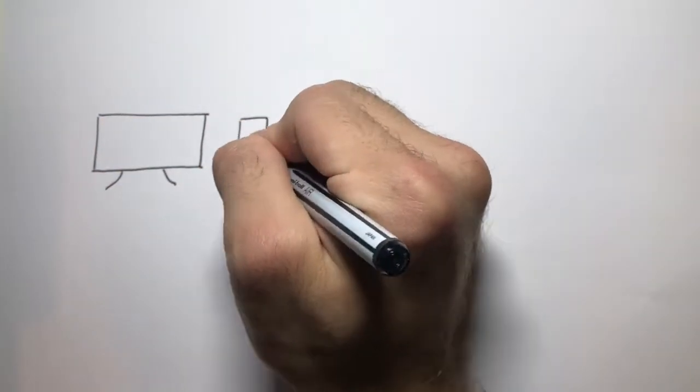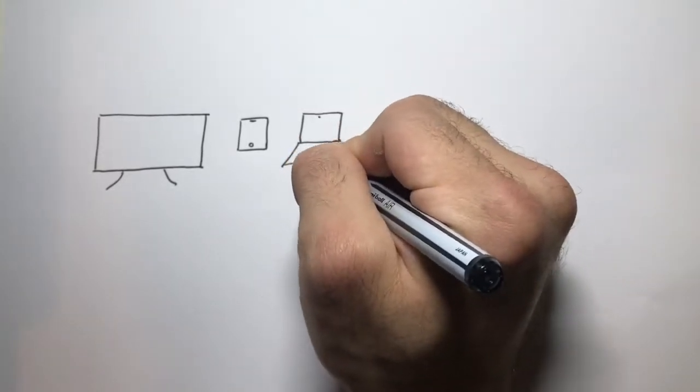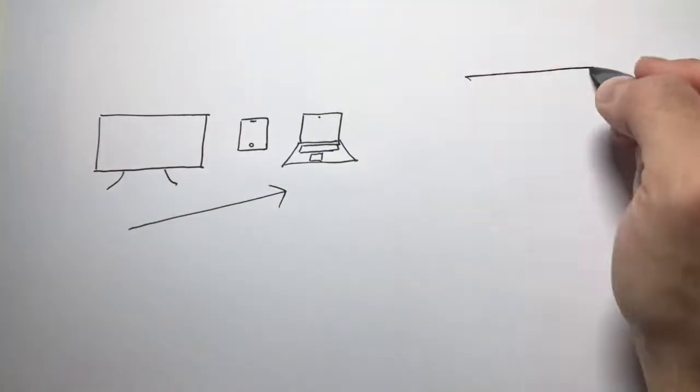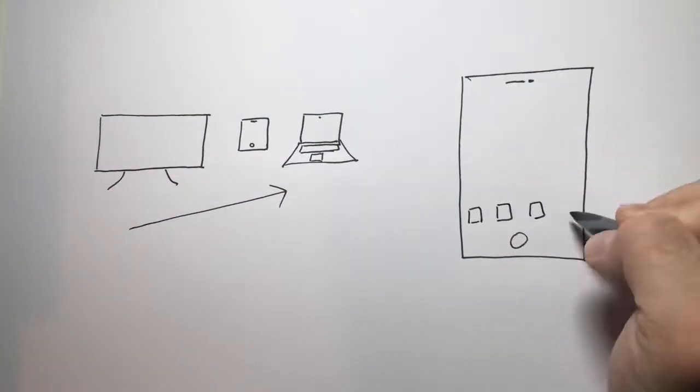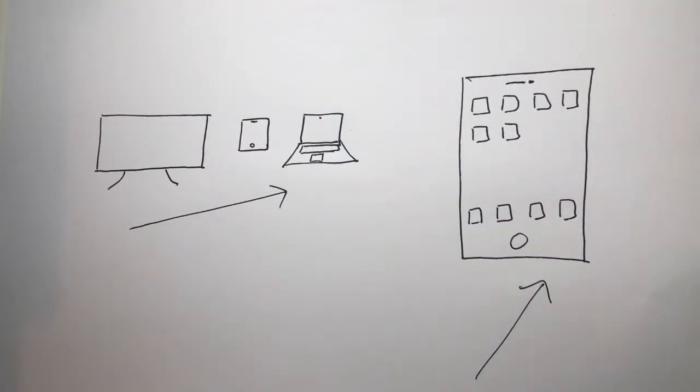A key technological trend relevant to the entertainment industry is the growing range and power of the devices with which consumers can engage with content. While televisions, tablets, laptops and more continue to push the boundaries, it's smartphones that have experienced perhaps one of the most extreme levels of development.